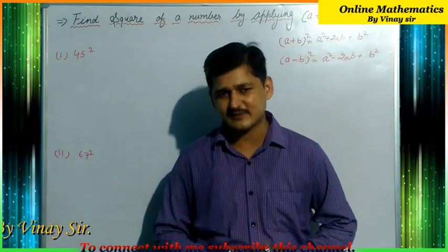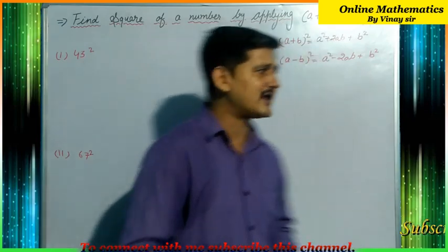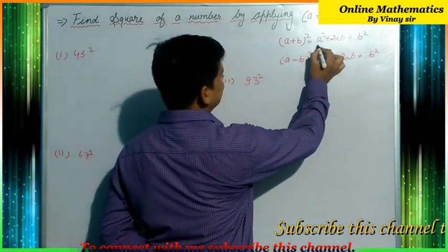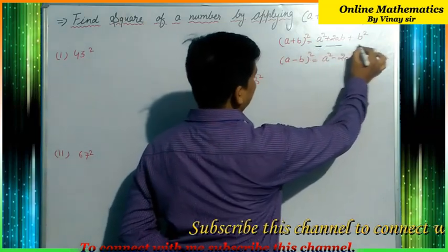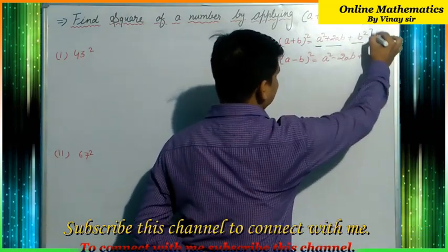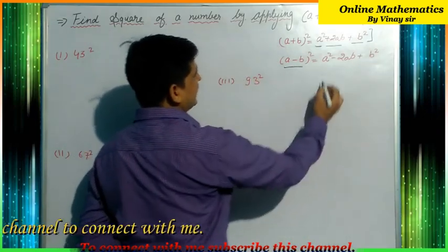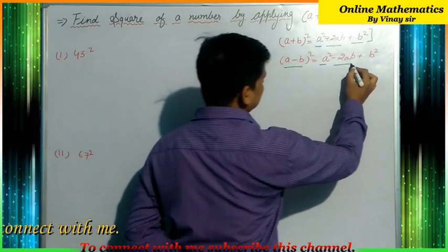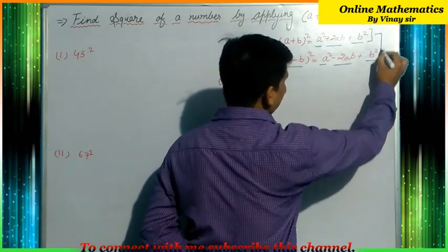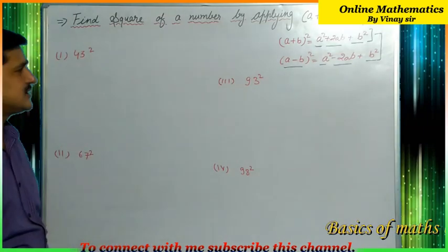Before we start, we have to understand these identities well. (a+b)² equals a² + 2ab + b². You have to remember this identity. Similarly, (a-b)² equals a² - 2ab + b². We are going to apply these identities to find the square of the given numbers.